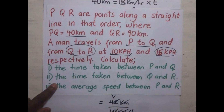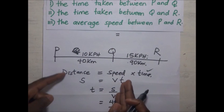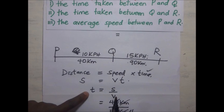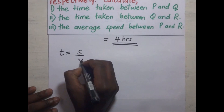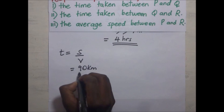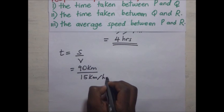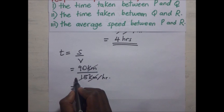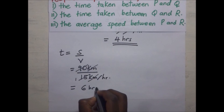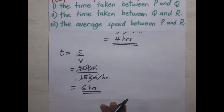For the time taken between Q and R: T equals S over V, which is 90 kilometers divided by 15 km/h. Simplifying gives 6 hours. So the time taken between Q and R is 6 hours.